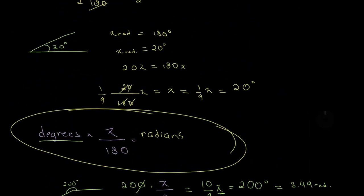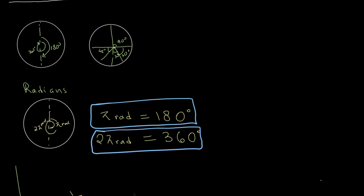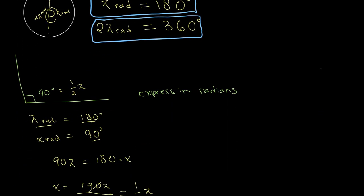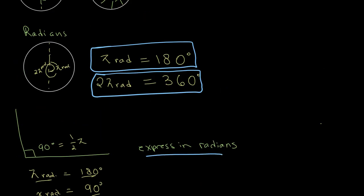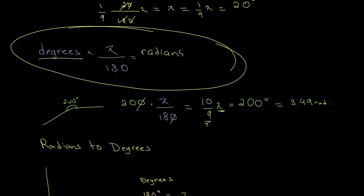So just as a quick recap, 180 degrees is equal to pi radians. Therefore, to get 360 degrees or a full revolution, we need 2 pi radians. And the two types of questions that you will be asked are to convert degrees to radians, and to convert radians to degrees.